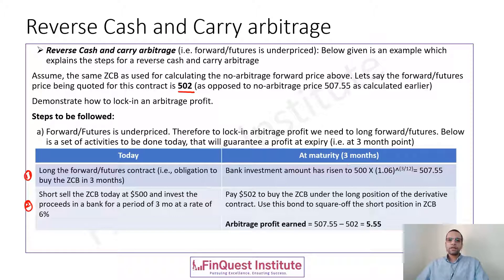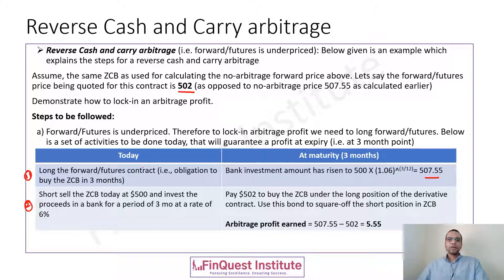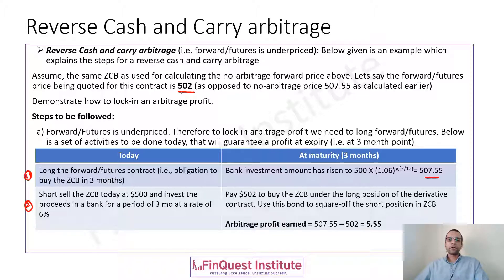At maturity — the three month time point — the bank investment rises to 500 multiplied by 1.06 with the exponent, which gives us 507.55. Now the long position has to be satisfied: I have an obligation to buy the zero coupon bond because of the long position held in the forward contract. So I pay 502, which was the quoted price, and purchase the zero coupon bond.